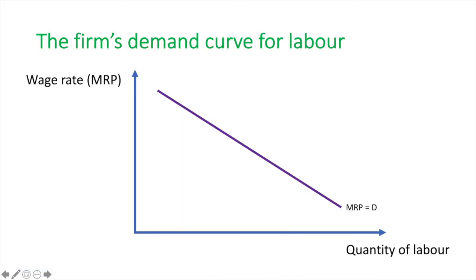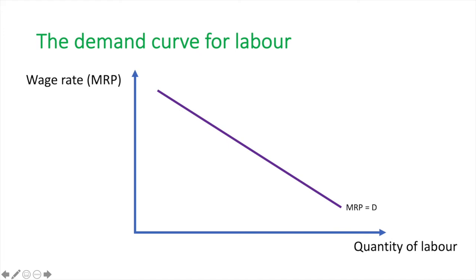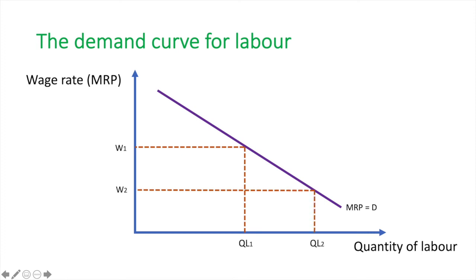All of this work brings us here. The MRP represents the firm's demand curve for labour. Essentially, the maximum amount a firm is willing to pay an employee is equal to the additional revenue that worker generates. It is fairly logical for the profit-maximizing firm. As the wage rate falls from W1 to W2, there is an increase in the quantity demanded of labour by the firm from QL1 to QL2. In the short run the firm faces diminishing marginal returns of labour and thus will only employ more labour at lower wage rates.